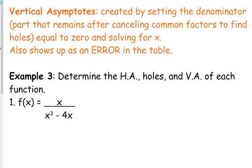Vertical asymptotes are created by setting the denominator after you simplify, because if you do it before you simplify, then you're going to count something that was a hole as a vertical asymptote as well. They are two different things. You set that equal to zero and solve for x.